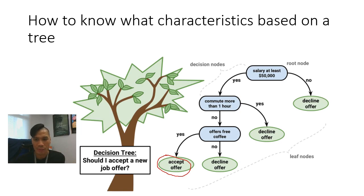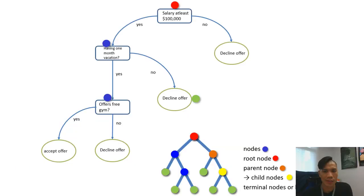So three decisions here would make me accept the job offer. Number one, salary at least 50,000. Number two, do not commute more than one hour. And number three, offers free coffee. And then that's when I accept the offer. For this particular example, I'm going to be teaching you how to use SPSS to do this kind of decision tree.